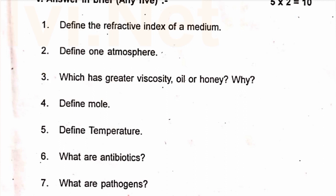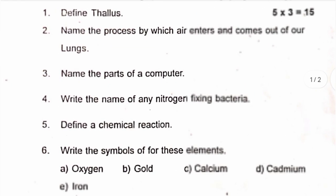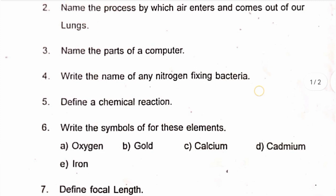Roman number 6: answer the following questions shortly, any five. Three-mark questions. First: define talus. Second: name the process by which air enters and comes out of our lungs. Third: name the parts of a computer. Fourth: write the name of any nitrogen-fixing bacteria. Number 5: define a chemical reaction. Number 6: write the symbol of these elements — A: oxygen, B: gold, C: calcium, D: cadmium, E: iron. Number 7: define focal length.